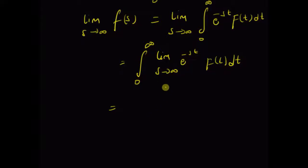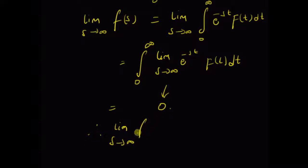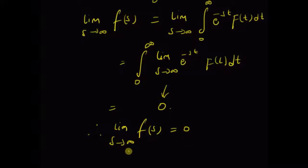That means this value is 0, and as a result the integral is also equal to 0. Therefore, limit as s tends to infinity of F(s) is equal to 0. This means that the Laplace transform eventually reaches a value equal to 0 as s tends to infinity.